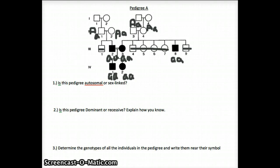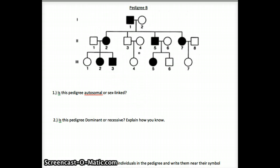Now let's move to the second part, which is pedigree B. Again, it's asking if it's autosomal or sex-linked. So I'm going to look and see whether it's males or females that have the trait. And in this case, we have both again. We have three males and four females, so it's probably autosomal.